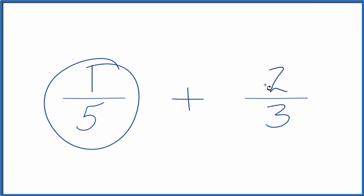Let's add the fractions one-fifth plus two-thirds. Here's how we do that. When we're adding fractions, what we want to do is get the denominators to be the same.